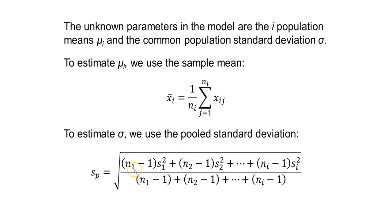For example, n sub 1 would be all samples collected in treatment 1. We can take that minus 1 and multiply by the standard deviation squared, or the variance.